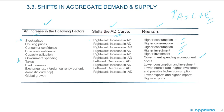Increased taxes, though, is a leftward shift — a decrease in aggregate demand due to lower consumption. Increased bank reserves is a rightward shift — an increase in aggregate demand because you'll have lower interest rates, higher investment, and possibly higher consumption. An increase in exchange rate — foreign currency per unit — is a leftward shift, a decrease in aggregate demand, because you'll have lower exports and higher imports. And finally, higher global growth, as you'd expect, is a rightward shift increasing aggregate demand. Most of these are fairly common sense and don't need to be memorized — just understood.